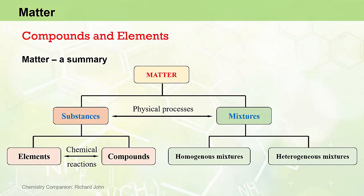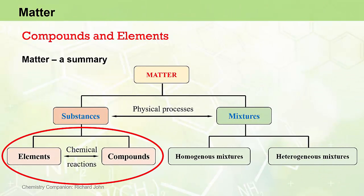As far as the matter diagram is concerned, we're focusing on the bottom left hand corner where we see that substances are either elements or compounds, and that elements can combine via chemical reactions to form compounds, and compounds can be broken down into their elemental constituents via chemical reactions.